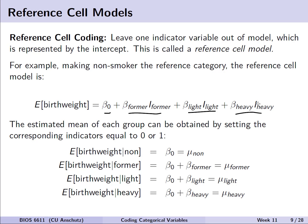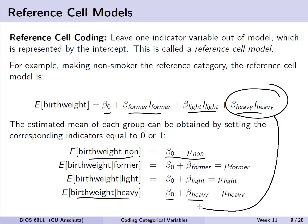The estimated mean of each group can then be obtained by setting the corresponding indicators equal to 0 or 1. For the expected birth weight given someone is a non-smoker, we set i-former, i-light, and i-heavy equal to 0, leaving just beta-naught as the mean for non-smokers. If we want to calculate the birth weight for a heavy smoker, we have beta-naught plus beta-heavy, because that indicator equals 1, which corresponds to the mean value in the heavy smoker subgroup.